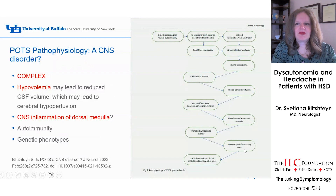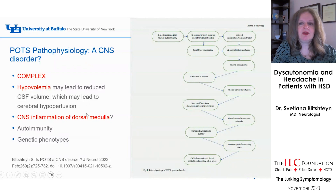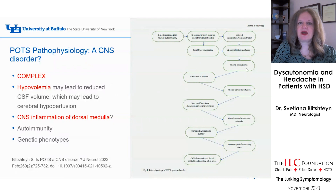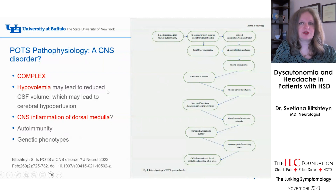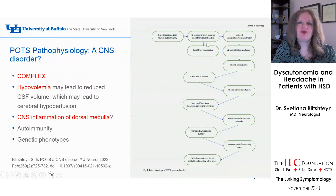The pathophysiology of POTS is very complex — I believe it is a central nervous system disorder, which I outlined in a 2022 paper in the Journal of Neurology called 'Is POTS a CNS Disorder?' There is an increased pro-inflammatory state with increased sympathetic hyperactivity, leading toward CNS inflammation at the dorsal medulla — a brainstem area — and possibly other brain areas. Hypovolemia is also very important, potentially leading to reduced CSF volume. Genetic predisposition, antibodies, small fiber neuropathy, hypovolemia, central autonomic networks, increased sympathetic activity, and a pro-inflammatory state are all important and tied together.